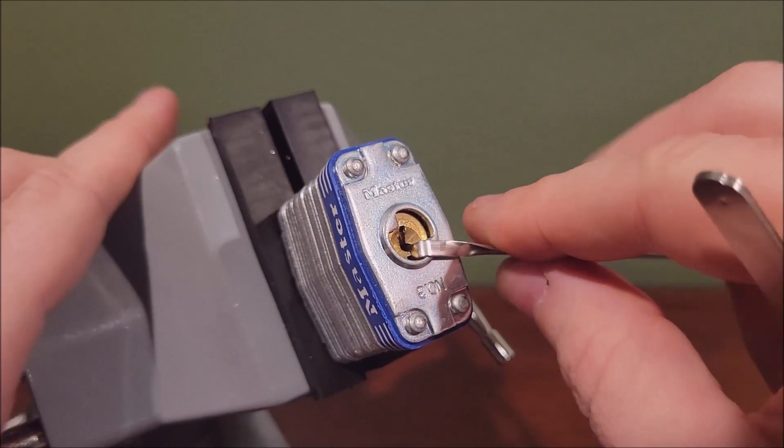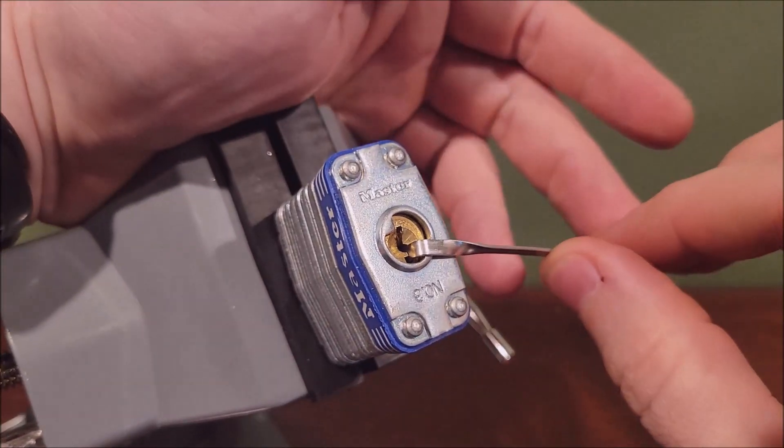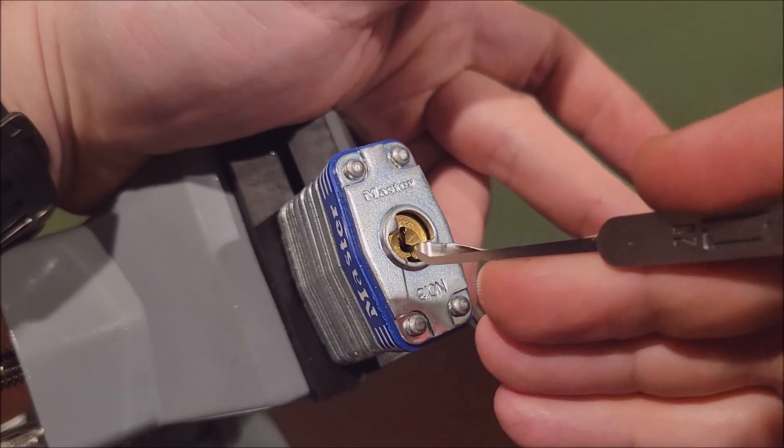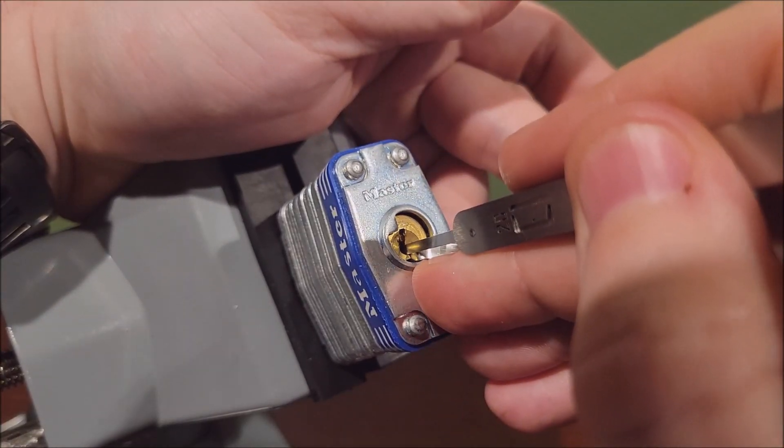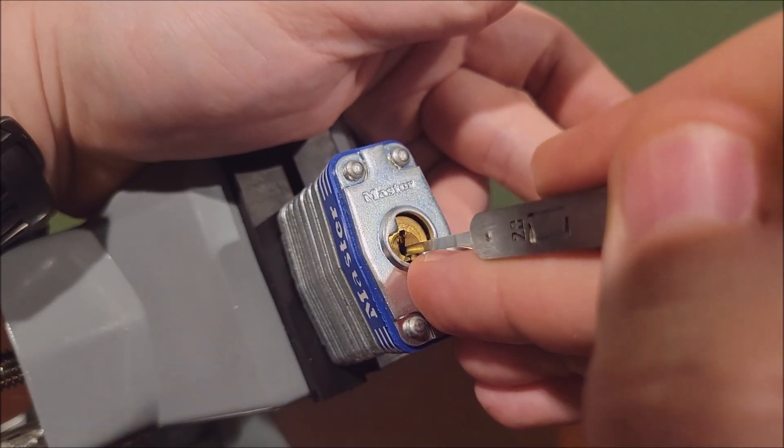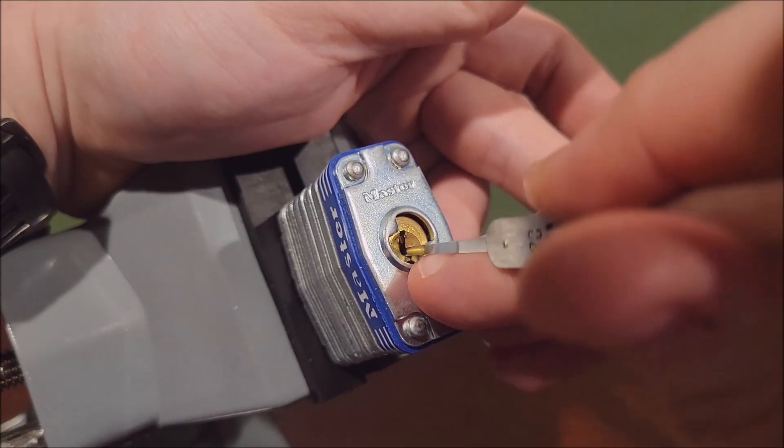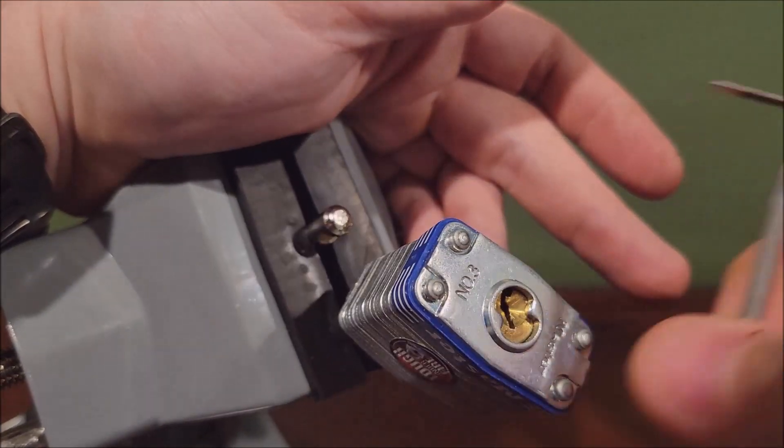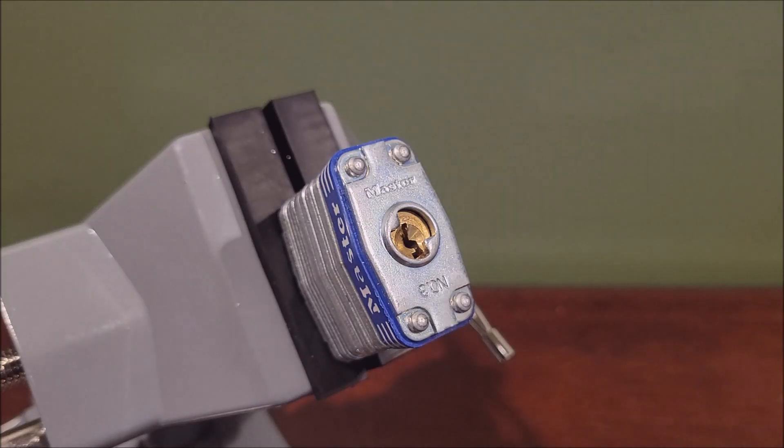Now I will reinsert my tension tool and transition into single pin picking. Again, tension tool with light pressure, and then my standard pick. How I normally do this is I insert my pick all the way to the back, then slowly come towards the camera here and just slowly pick each pin. As I work my way back, ever so slowly applying tension to each pin, you can see again it opened just that quickly. I'll do it one last time.